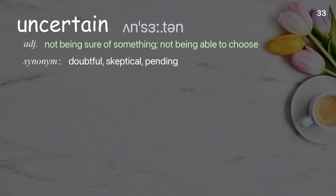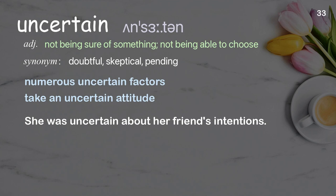Uncertain: not being sure of something; not being able to choose. Examples: numerous uncertain factors, take an uncertain attitude. She was uncertain about her friend's intentions.